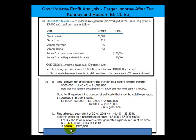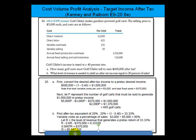Dividing both sides by 0.06667, we calculate that R equals $5,547,226.